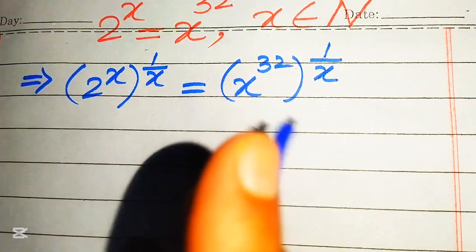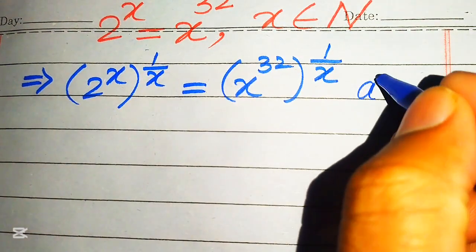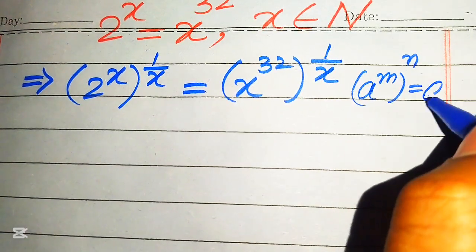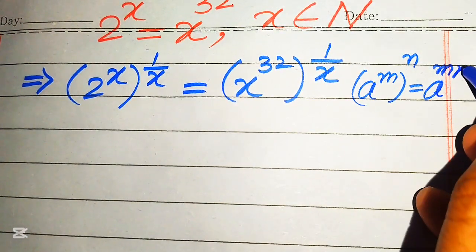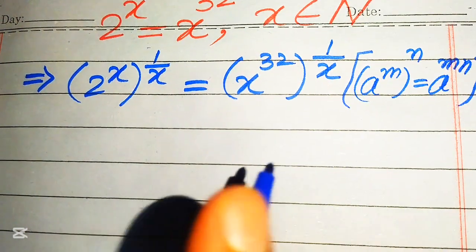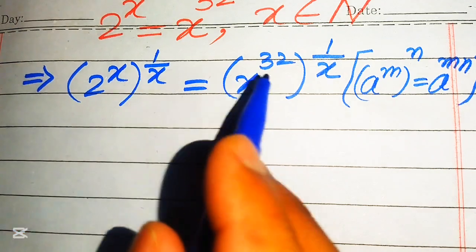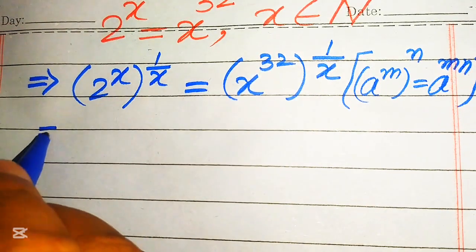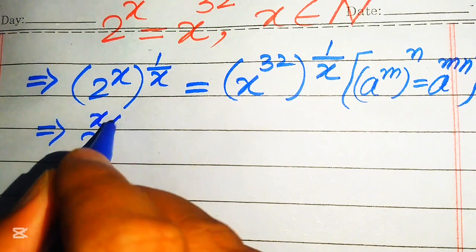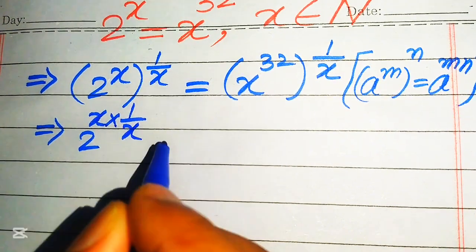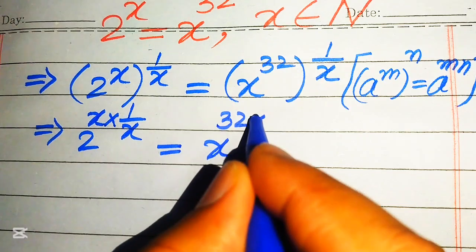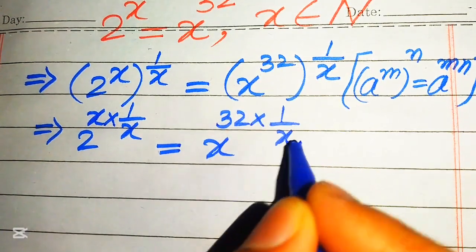Now we apply the exponent law: a to the power of m, to the power of n, equals a to the power of m multiplied by n. According to this law, we multiply the two exponents on each side, giving us 2 to the power of x times 1 over x, equals x to the power of 32 times 1 over x.